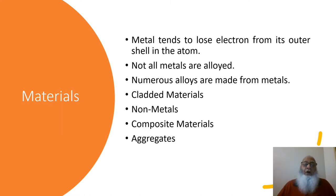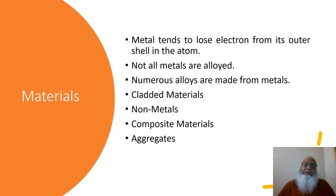This slide shows how many materials the corrosion engineer has to deal with in their professional career. First is metals — metals tend to lose electrons from the outer shell of their atoms. There are also alloys, made by mixing metals together, and duplex alloys made for industrial applications. Then there are clad materials, non-metals, composite materials, and aggregates. The corrosion engineer has to deal with all these materials, which shows how vast the actual domain of corrosion is in the industrial sector.